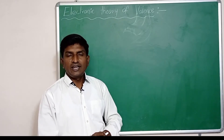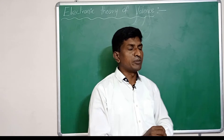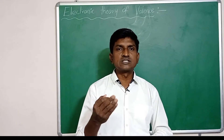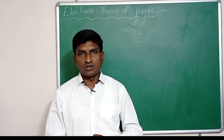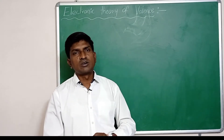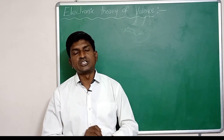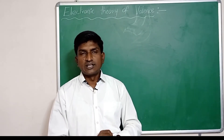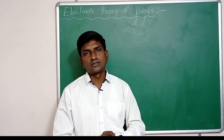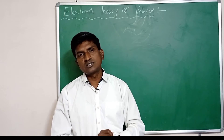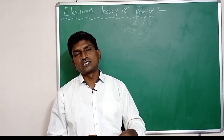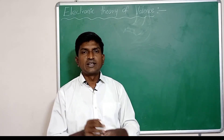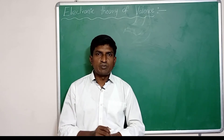Due to having 8 electrons, the noble gases are unreactive and stable. To get 8 electrons in their outermost orbits, other group elements — first, second, third, fourth, fifth, sixth, and seventh group elements — undergo chemical changes. During these chemical changes, they lose or gain electrons, and by doing so they get 8 electrons in their outermost valency orbit, gaining stability.